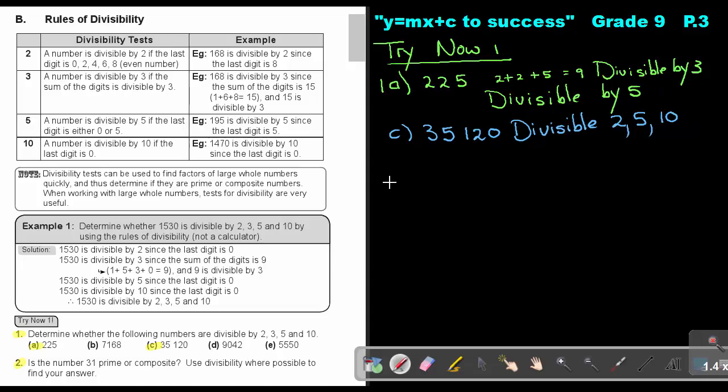We look at number 2. Is the number 31 prime or composite? Use divisibility where possible to find your answer. If I test that number 31, it cannot divide by 2. If by 3, 3 plus 1 is 4, so it cannot divide by 3. It cannot divide by 7, 5, or 10. So it can only divide by 1 and 31. Therefore, it's a prime number.